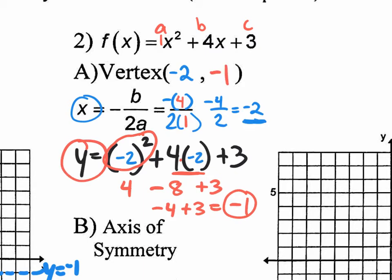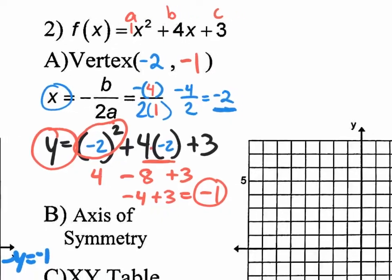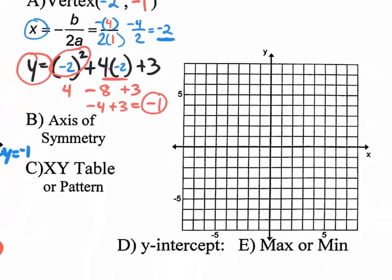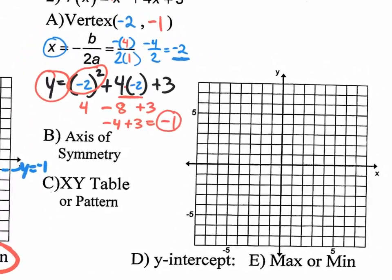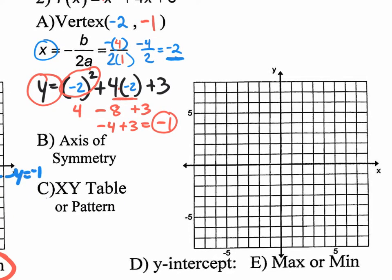We can now go to the graph and plot the vertex at negative 2, negative 1. So negative 2 on the x, negative 1 on the y. Instantly, we should draw our axis of symmetry right through that vertex. Then we state the equation of the axis of symmetry: x equals negative 2. You have to put x equals — if you don't put that, it's going to be wrong.